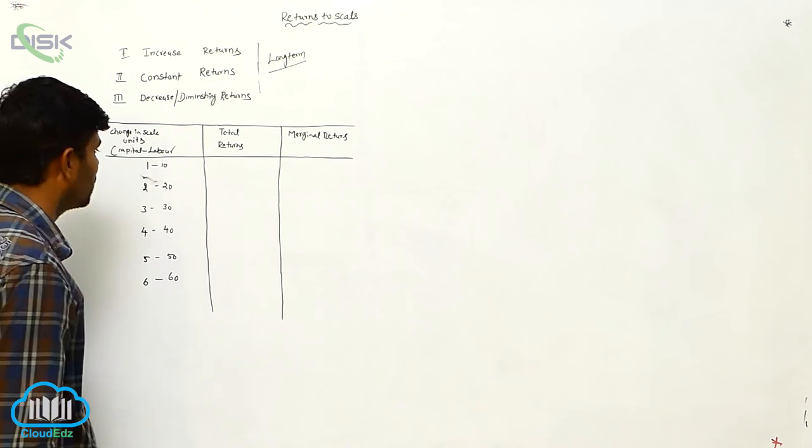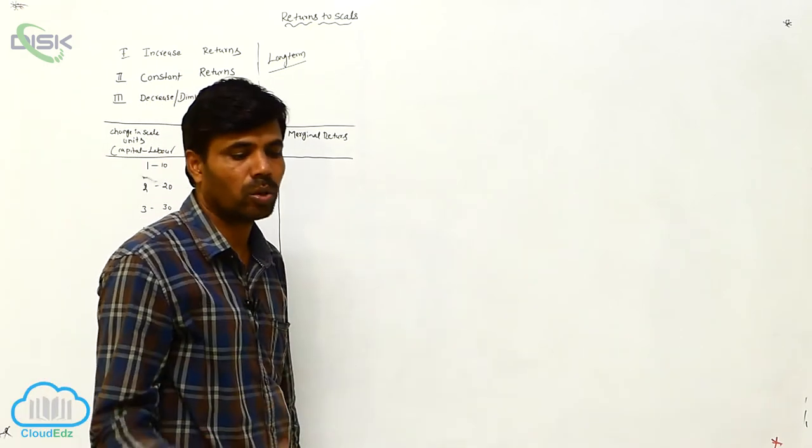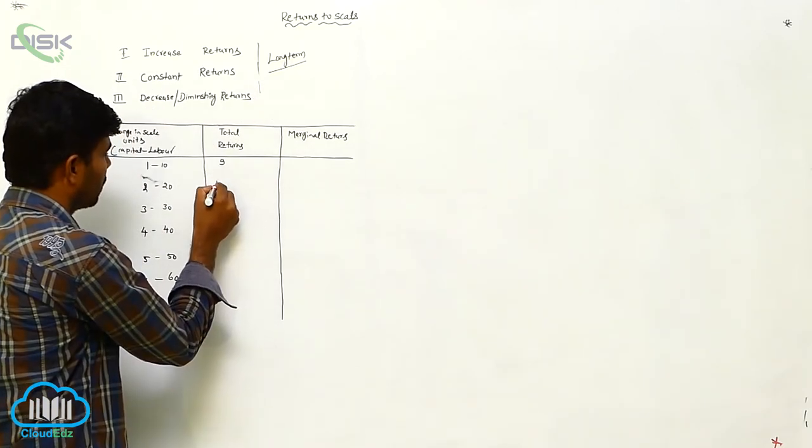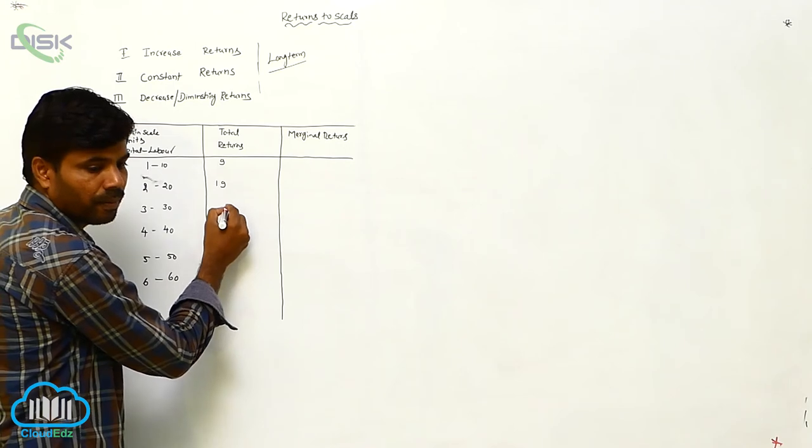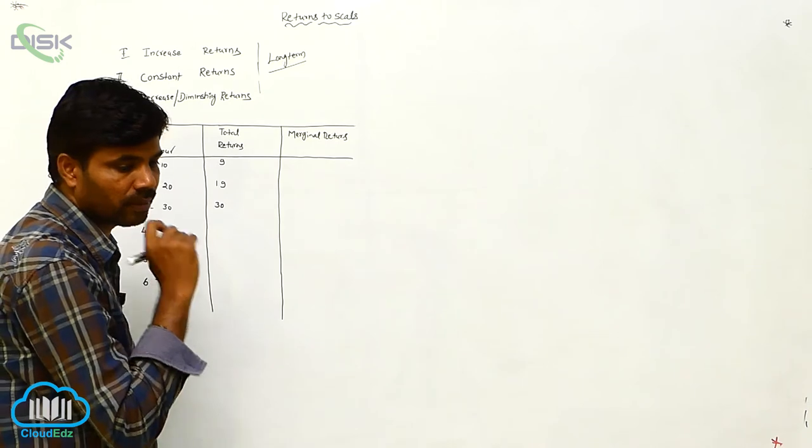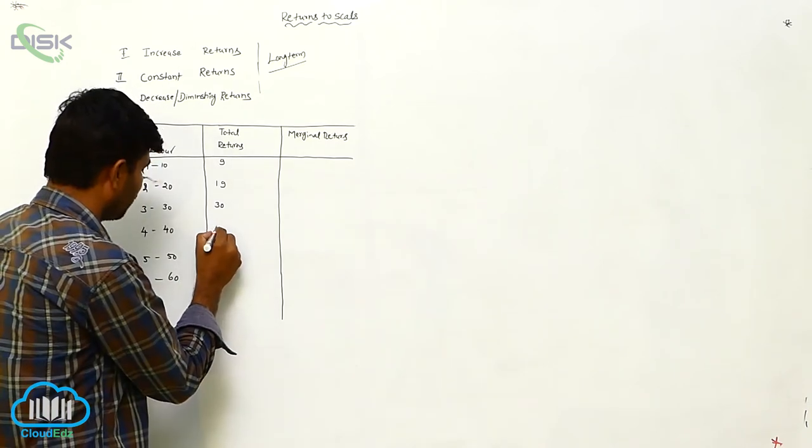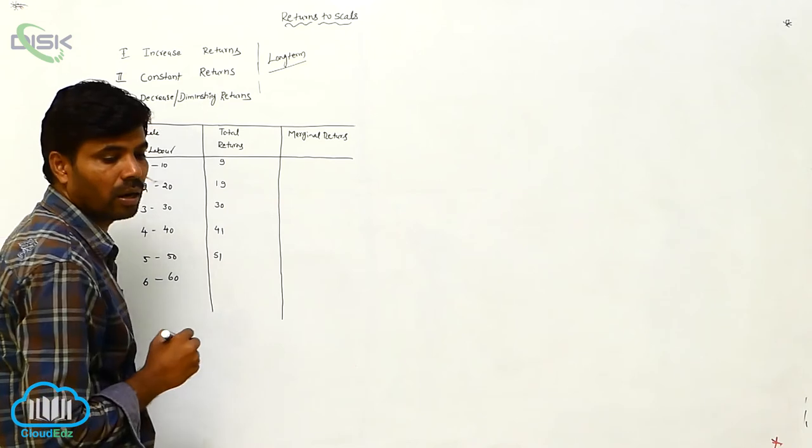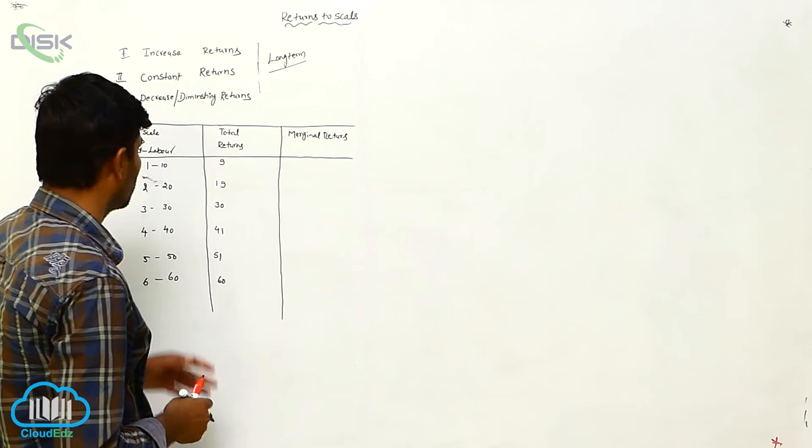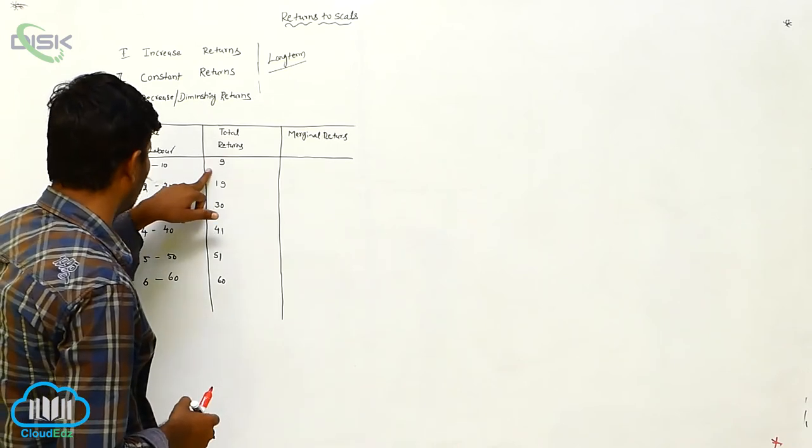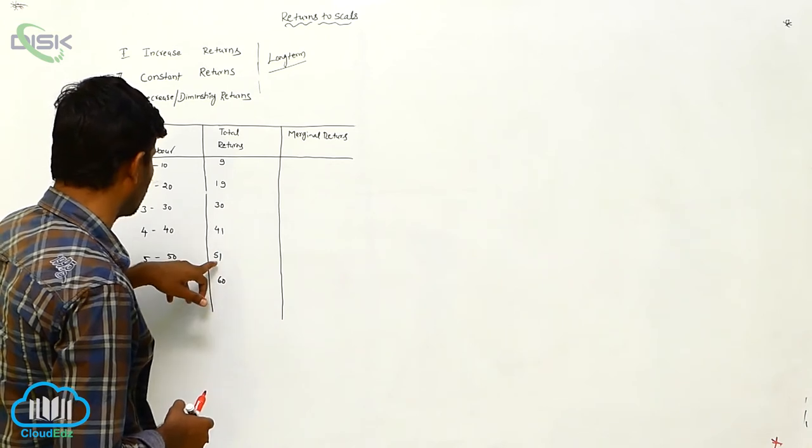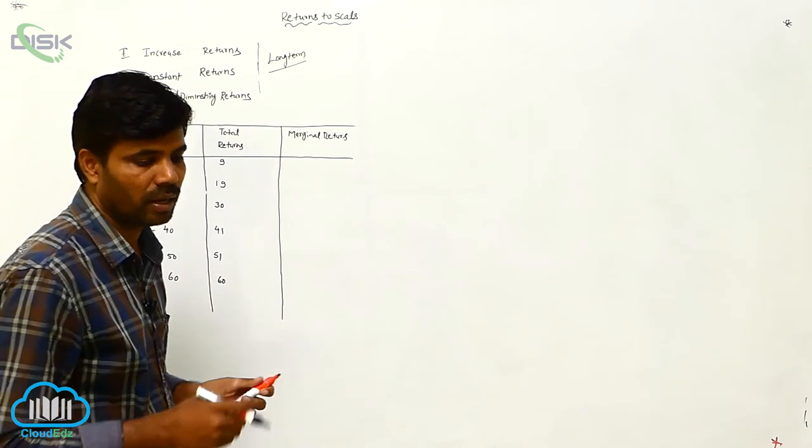Total returns. Total returns: 9, 19, 30. Next is 41, 51. Next is 60. We can say that one, like minus 1, minus 1, 1, constant. 41, constant, 41, plus. Total returns, plus, and same thing.